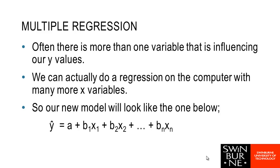That was a simple example with one dependent variable predicted by one independent variable. More commonly we'll have multiple regression, where instead of just one predicting variable like size of house, we might have lots — size of house, number of bedrooms, and many other variables. The process for predictions is exactly the same: we have a constant, a slope for variable one, a slope for variable two, and so on, and we just plug in our values for each.